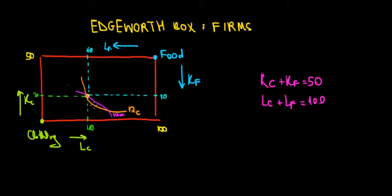With the same logic, there's going to be a slope tangent to a point on the ISO quant of the companies that's going to show the willingness to exchange capital for labor. Suppose the orange ISO quant belongs to the clothing company and the purple ISO quant belongs to the food company. Looking from each company's perspective, clothing has a convex ISO quant — the regular one — and food, looking from food's perspective, also has a convex ISO quant.